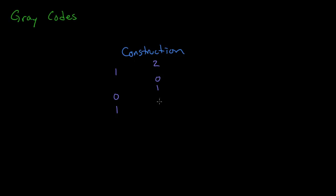Just the same as the top half, just reflected downwards. And then in the next bit position, put a 0 for the top half and a 1 for the bottom half. So there's your 2-bit gray code.